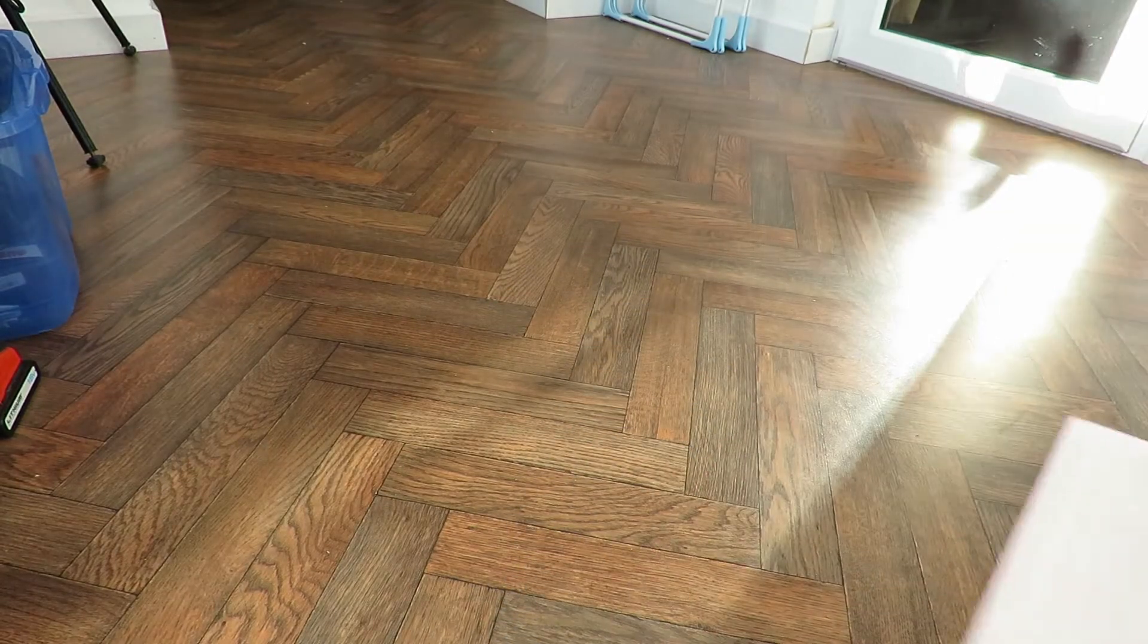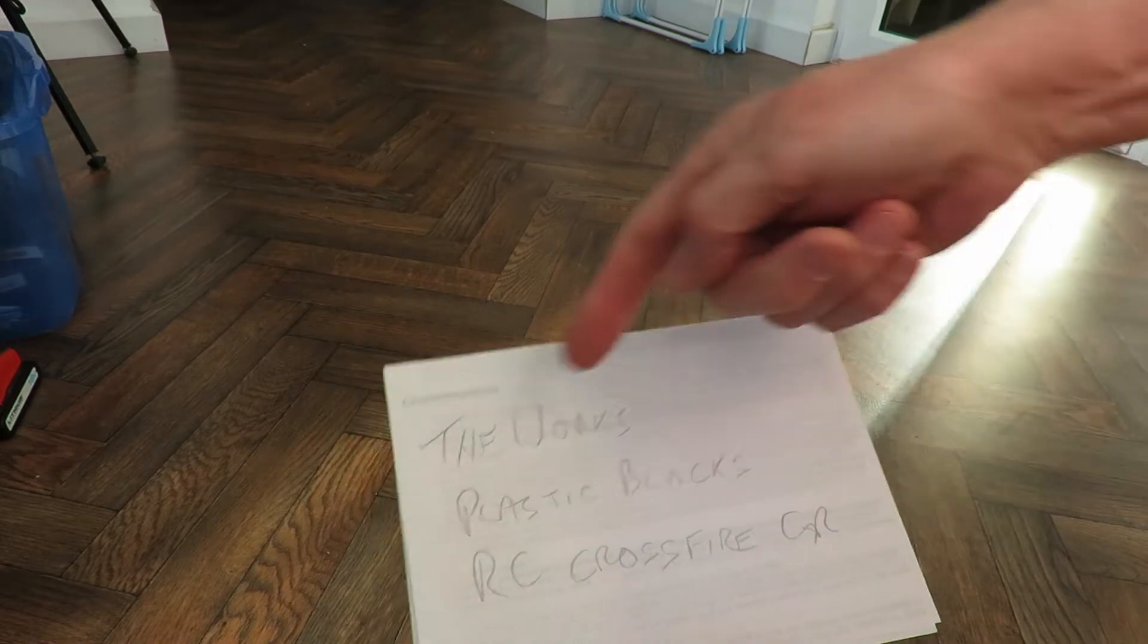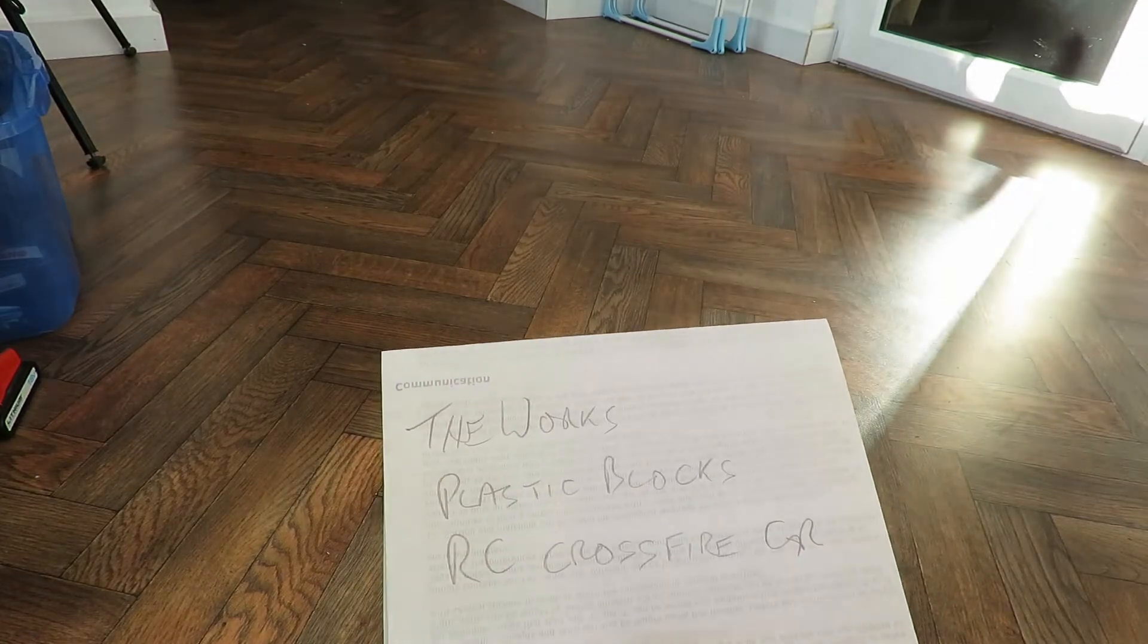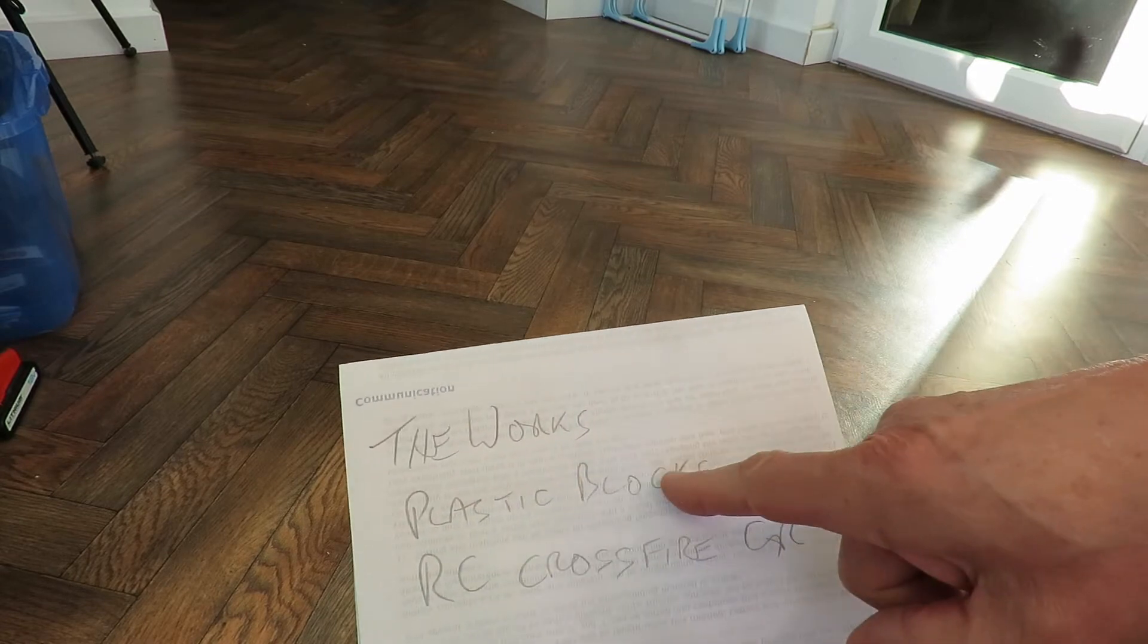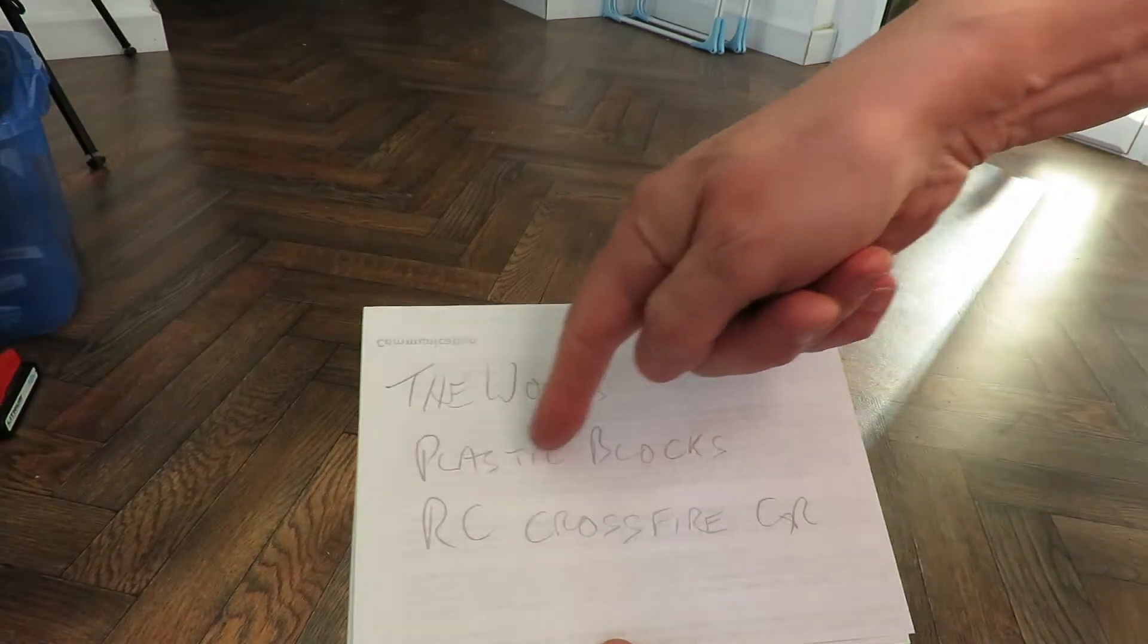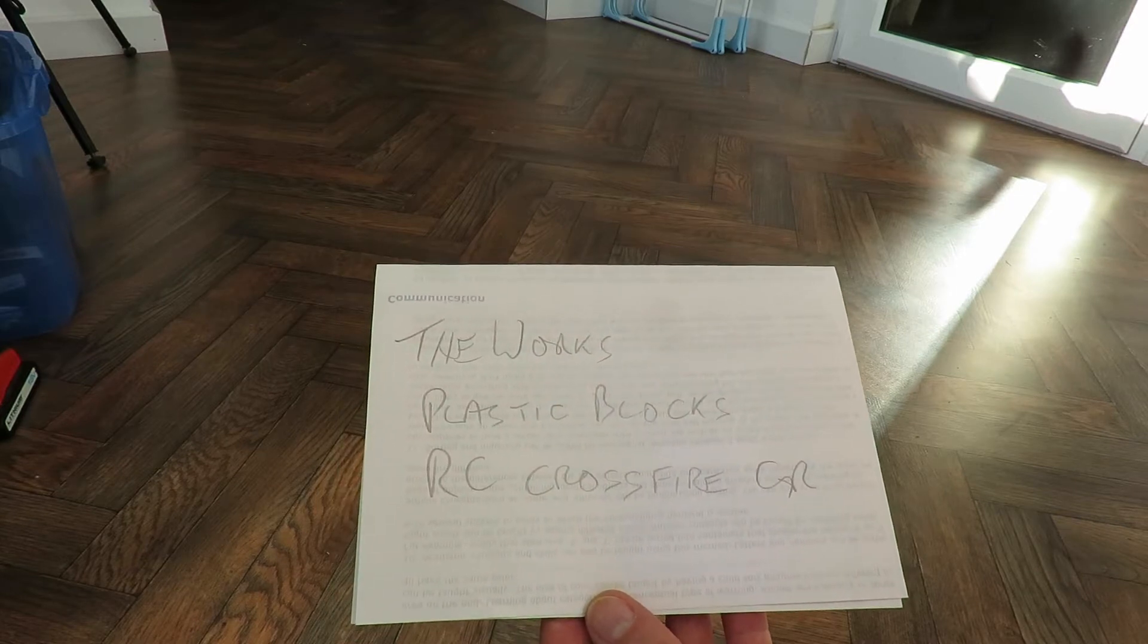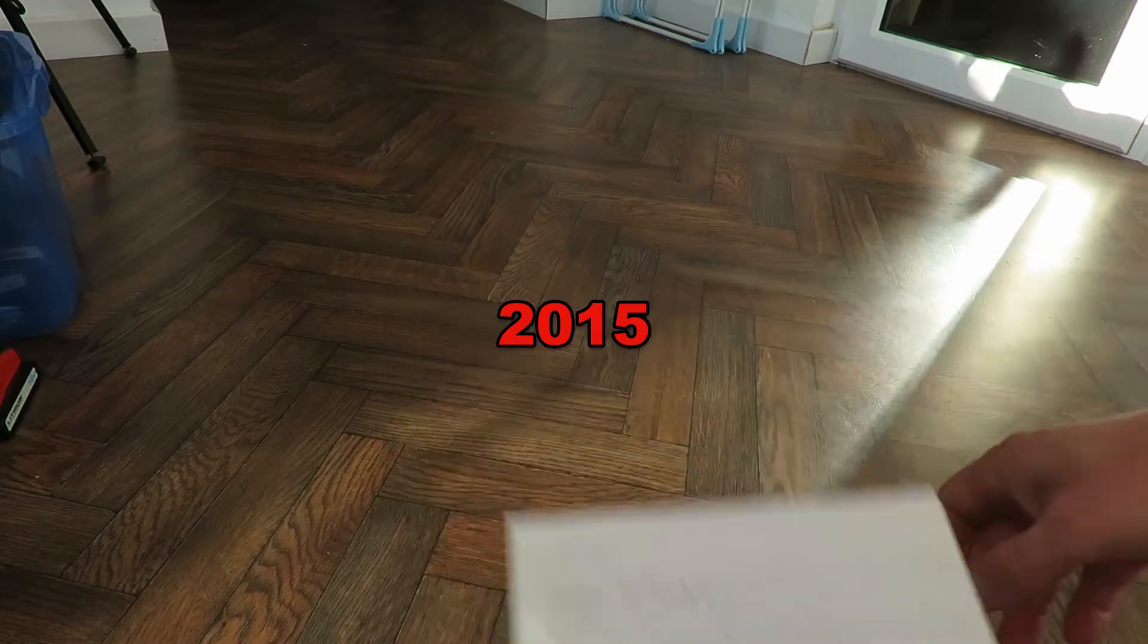Hang on. Right, I've written it down so I can't forget it this time. It came from The Works, which is a shop. Mainly stationery they do, but they do toys as well. It's called Plastic Blocks RC Crossfire Car. I guess they call it Plastic Blocks to avoid any copyright issue with Lego. And it was 2016 I bought it.